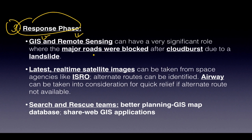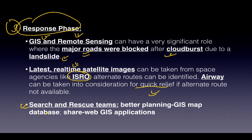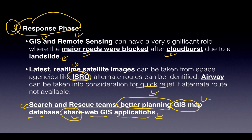Phase 3 is the Response Phase. GIS and remote sensing can play a significant role when roads are blocked. Real-time satellite images from ISRO can help find alternate road routes or identify where soldiers can go on foot, or when airway access is needed. Search and rescue teams can do better planning using GIS maps and share information using web-based GIS applications.